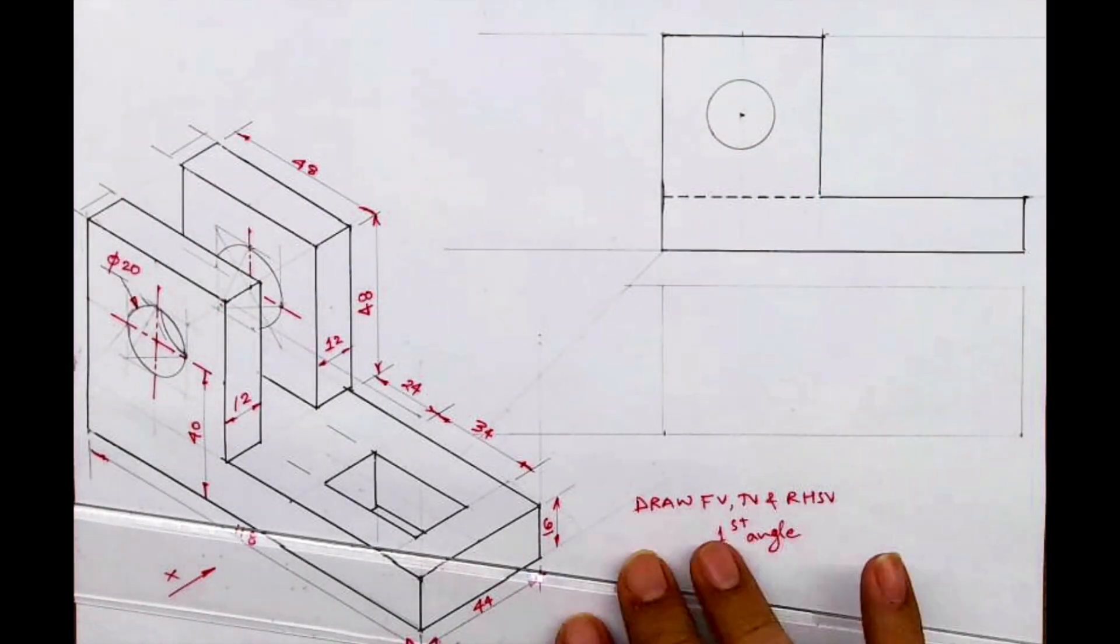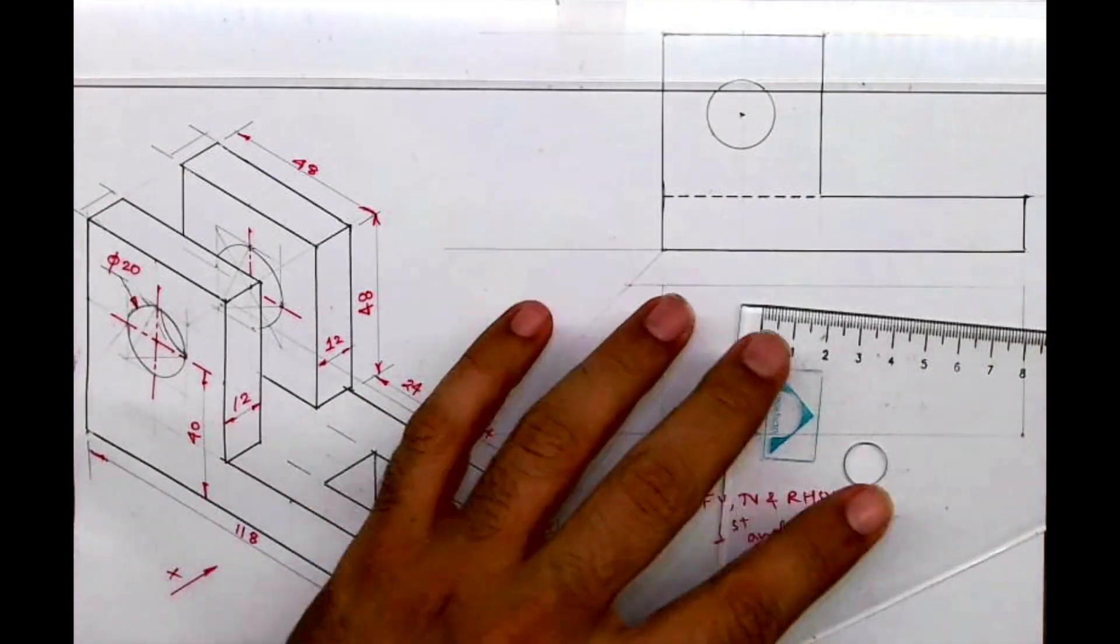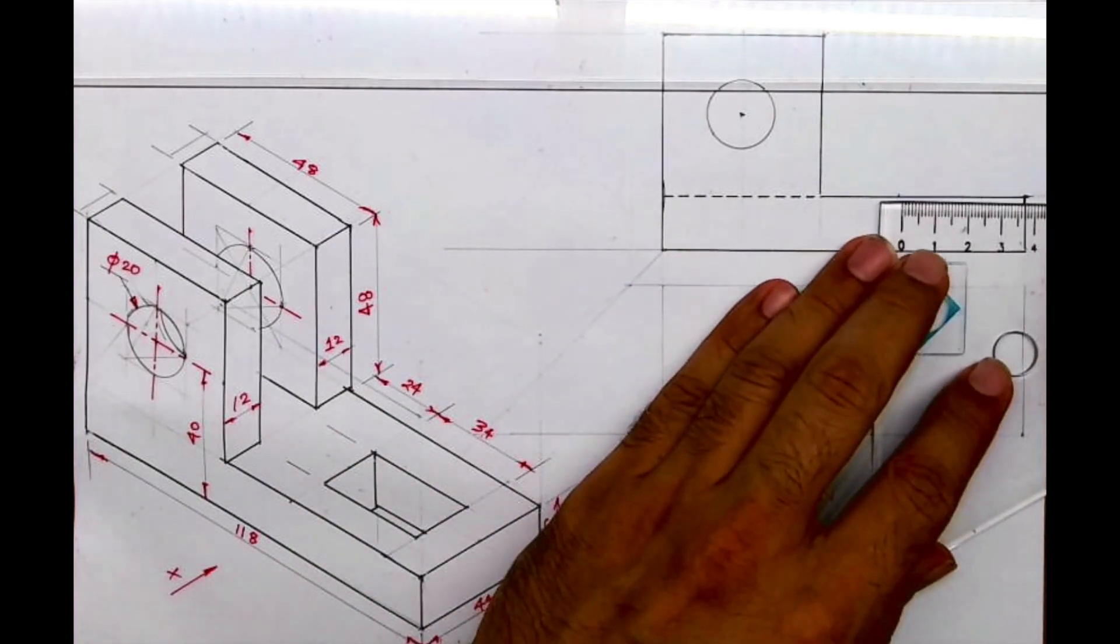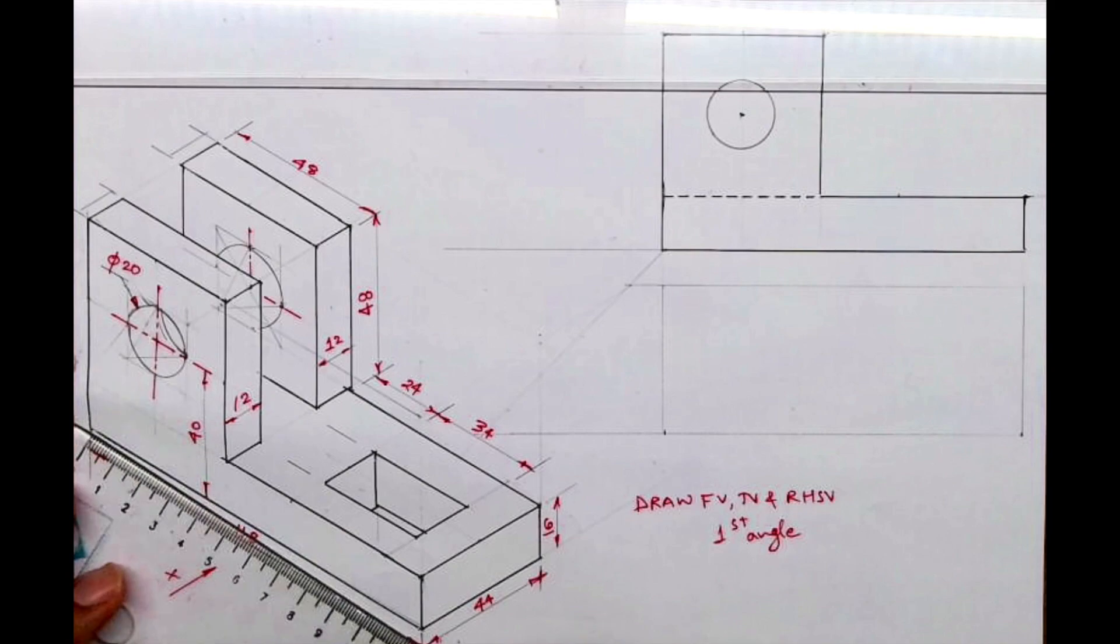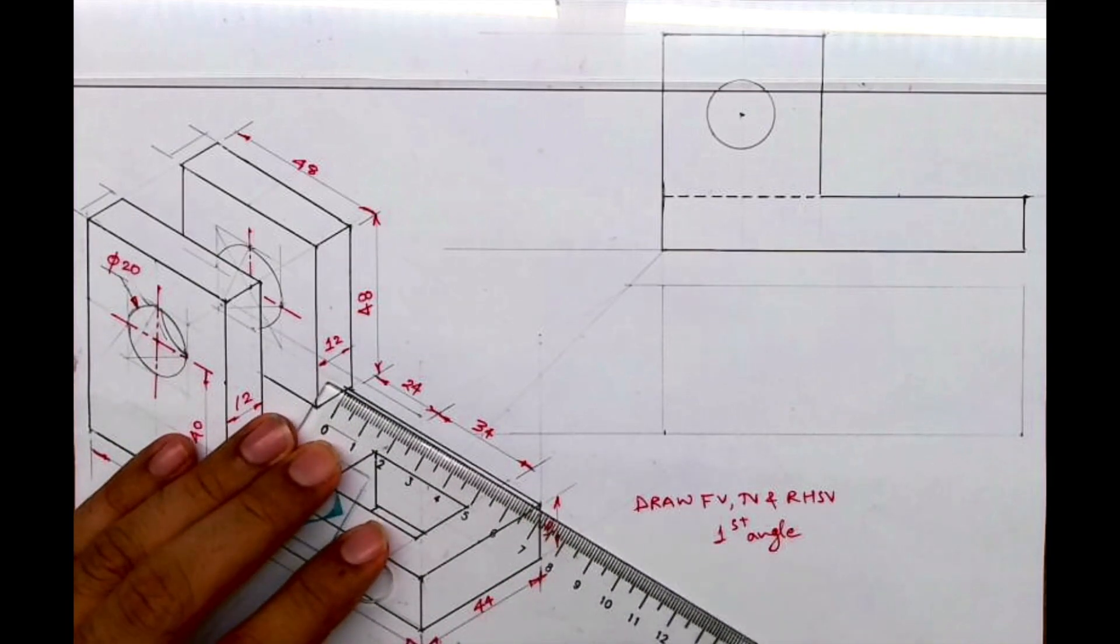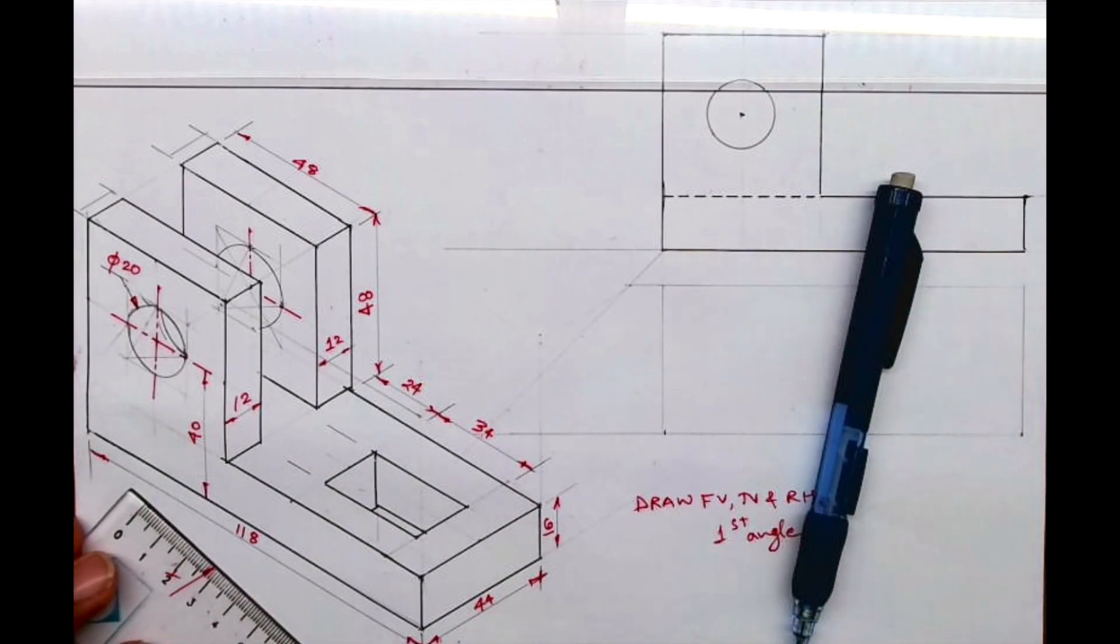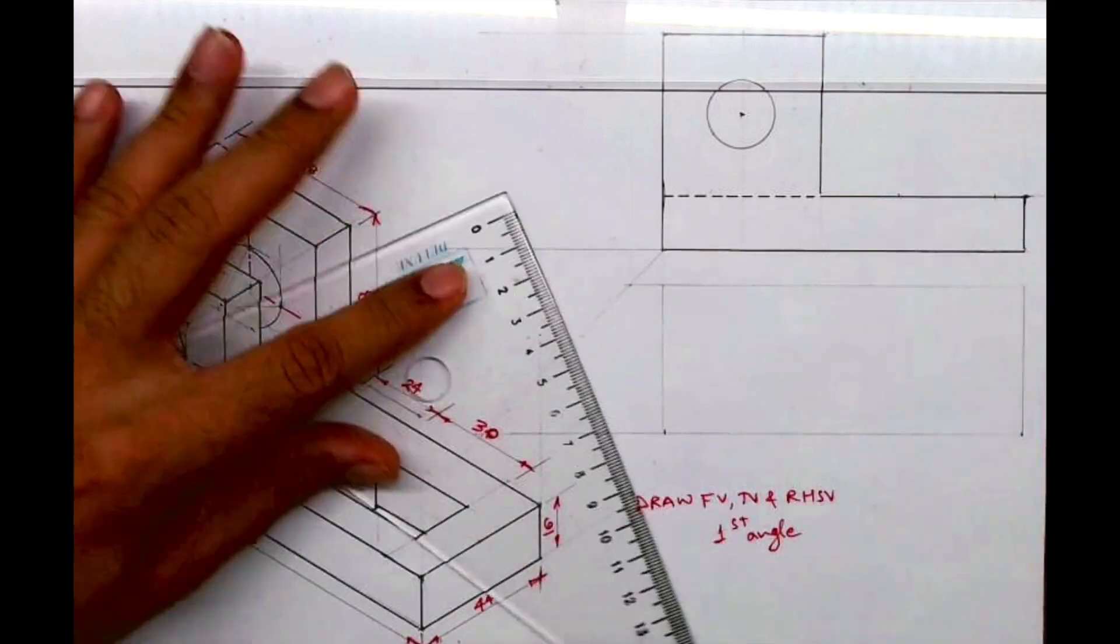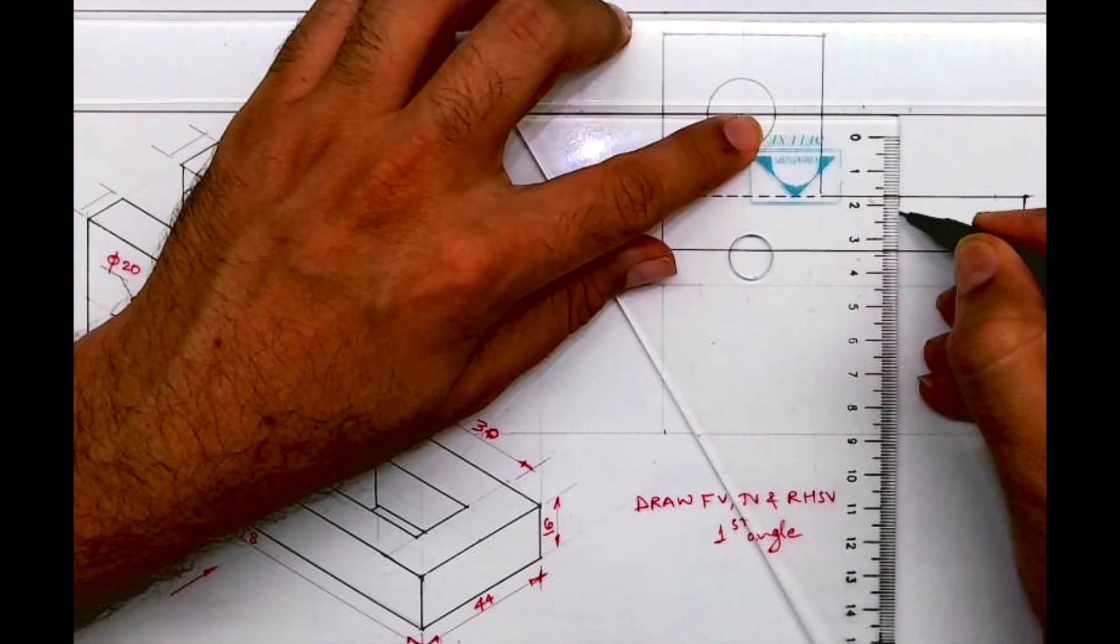Now there are two more dotted lines. How much is the distance? 24 and... wait, it is not 34, it is actually 30. So I'll mark 24, and from here I will take 30 and draw a dotted line. We're done with the front view.